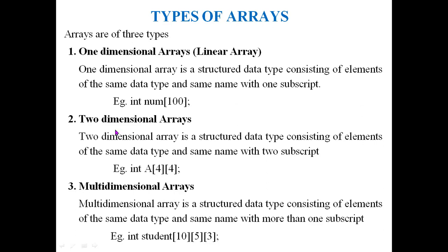A two-dimensional array is a structured data type consisting of elements of the same data type with the same name, but has two subscripts — one for row and one for column. The first subscript represents the number of rows and the second represents the number of columns. In the given example, there are four rows and four columns. A multi-dimensional array has more than two subscripts. For example, 'student' is an integer array that can store 10×5×3 = 150 elements.